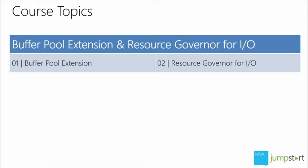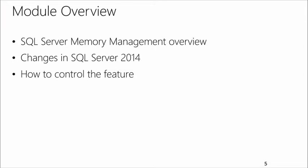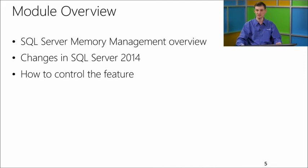Input-output is an important thing for the resources that exist on the computer, so we're going to spend some time on that. The first thing in the list is the extension of the buffer pool. In this section I will talk about three things: an overview of how memory management works for SQL Server, what exactly we changed and why that feature was built, and how you can control that feature and what performance counters you can have.